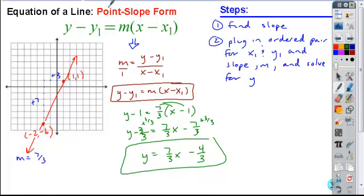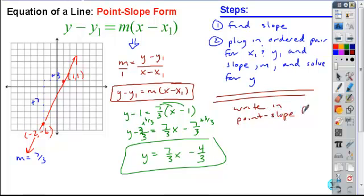Let's say a problem on your homework says write in point-slope form. If you wanted to write this, given these two points, you wanted to write it in point-slope form, you could do one of the following. You could either write y minus 1 equals 7 thirds times x minus 1, or you can write y minus a negative 6, so y plus 6, is equal to 7 thirds times x minus a negative 2, so plus 2. Either of those would be written in point-slope form.